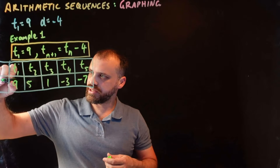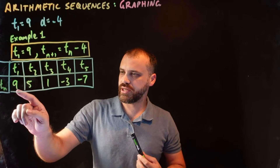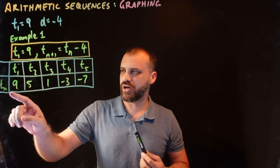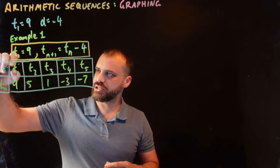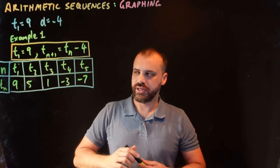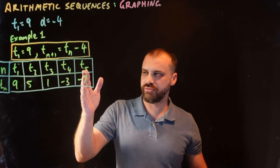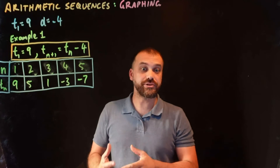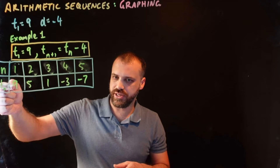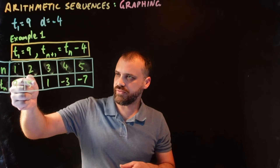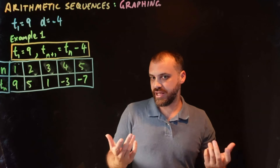This column is term n. So term one is nine, term two is five, term three is one. I'm going to relabel the top row as just n, going n: one, two, three, four, five. So let's get rid of the t's. We have a nice little table where the first term is nine, the second term is five, the third term is one, the fourth term is negative three, and the fifth term is negative seven.